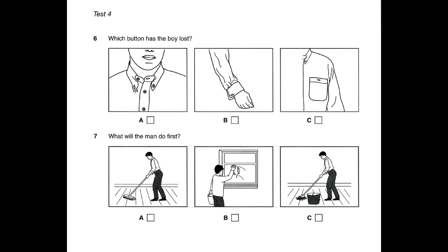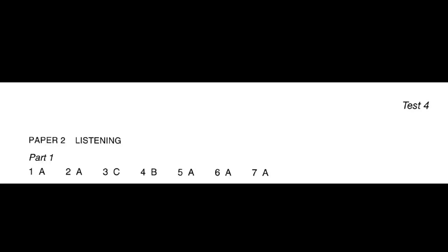Seven. Before we start painting, I'll wash the kitchen floor because it's really dirty. It'll be easier if you sweep it before you do that, Nick. I'll carry on cleaning the windows. Okay. And then we can start painting the walls. That is the end of part one.